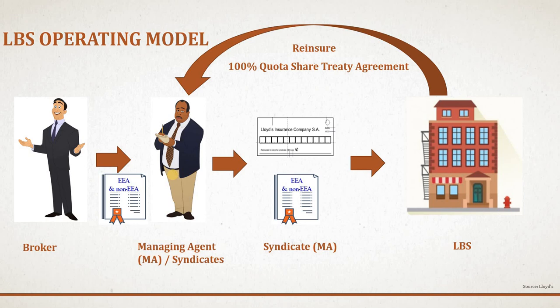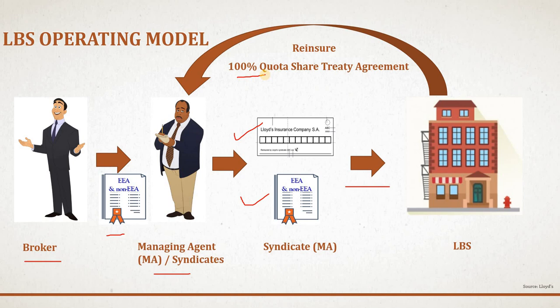Let's do a quick recap before getting into the impact of Brexit on the open market claim process. Previously we understood that the broker will produce the business as usual, and if the business has both EEA and non-EEA elements, then the MRC will have two separate sections. The managing agent will underwrite based on those MRC sections and put the LBS stamp on the EEA section and the normal stamp on the non-EEA section. The business will then be placed to LBS, and LBS will do the proceedings back to the managing agent on the basis of a 100% quota share treaty agreement — so LBS is acting like a fronting reinsurer in this case.